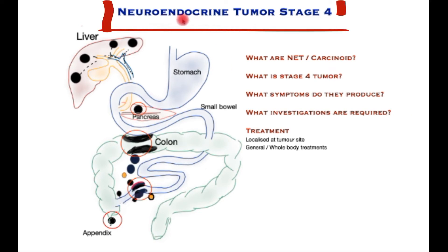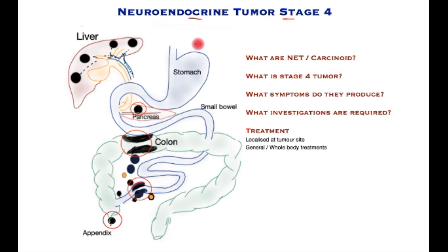In this video we will find out how patients with neuroendocrine tumor stage 4, previously called carcinoid tumors, are treated. In particular we'll find out what these tumors are, what is stage 4 disease, what symptoms do these tumors produce, what tests are required to help in finding the right treatment, and then the treatment itself.